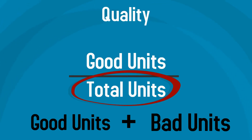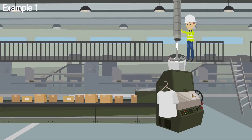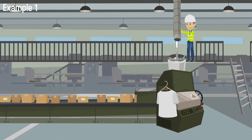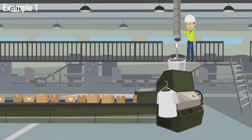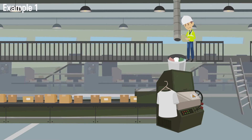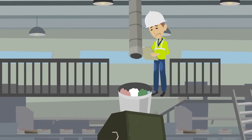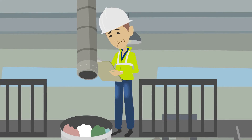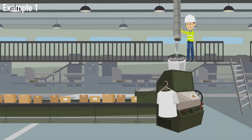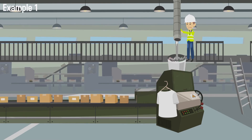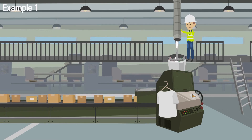Units can be considered bad for a number of reasons. In our first example, bad units are a result of incorrect information. The operator at Company A uses specific instructions for each order. The instructions state to use grey dye for the current shirt order. However, the operator realized after completing about half of the products that the information he was given was for a different order — instead of dyeing the shirts grey, he was actually supposed to be dyeing them green.